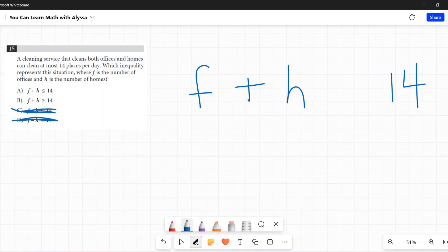So it's either going to be less than or equal to or greater than or equal to. We're saying at most 14 places a day. Does that mean they could clean 20? No, 14 is the most. They can do 14, but no more than 14. It would have to be less than or equal to 14.